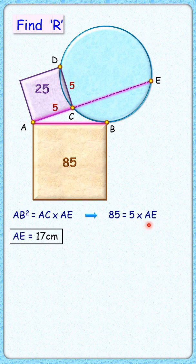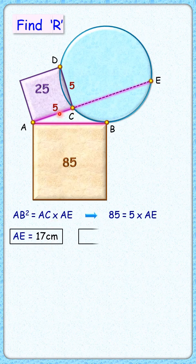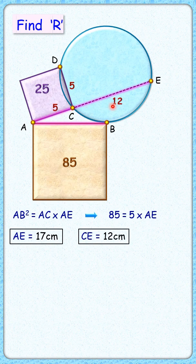Solving it, we get AE length as 17 centimeters and CE length will be 17 minus 5, or 12 centimeters.